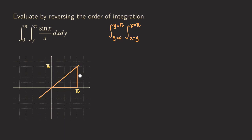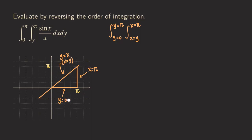Now we label each of those line segments. The diagonal one is y equals x (or x equals y). The vertical one is x equals pi. The horizontal one is y equals zero. Now we have the region defined and we are ready to rewrite the integral in the reversed order.